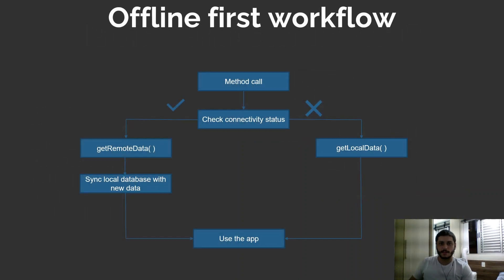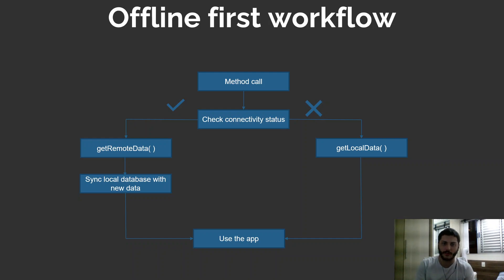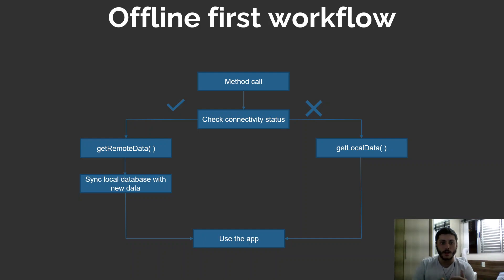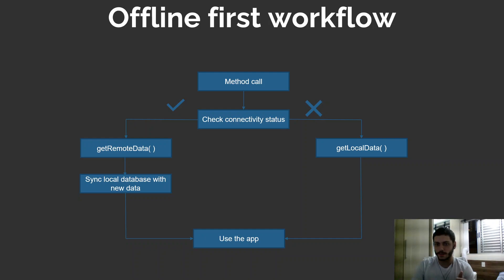In this presentation, we'll make a simple workflow to show how offline first works. When a method is called, Flutter checks connectivity status to see if we're connected to Wi-Fi or mobile data. If connected, we simply get the remote data and then sync our local database on the phone with the new data. If there's no connection, we just get the local data — and for the user, the experience won't change at all.